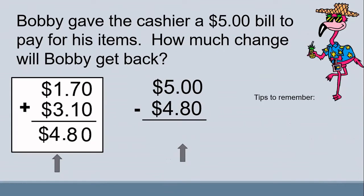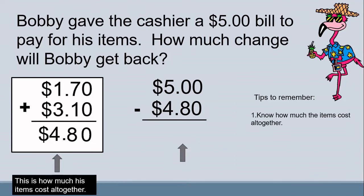Bobby gave the cashier a $5 bill to pay for his items. How much change will Bobby get back? Before we begin, let's look at the tips. Number 1: know how much the items cost all together. If you said $4.80, you are correct. Number 2: know how much money he gave the cashier. That's right, he gave the cashier $5.